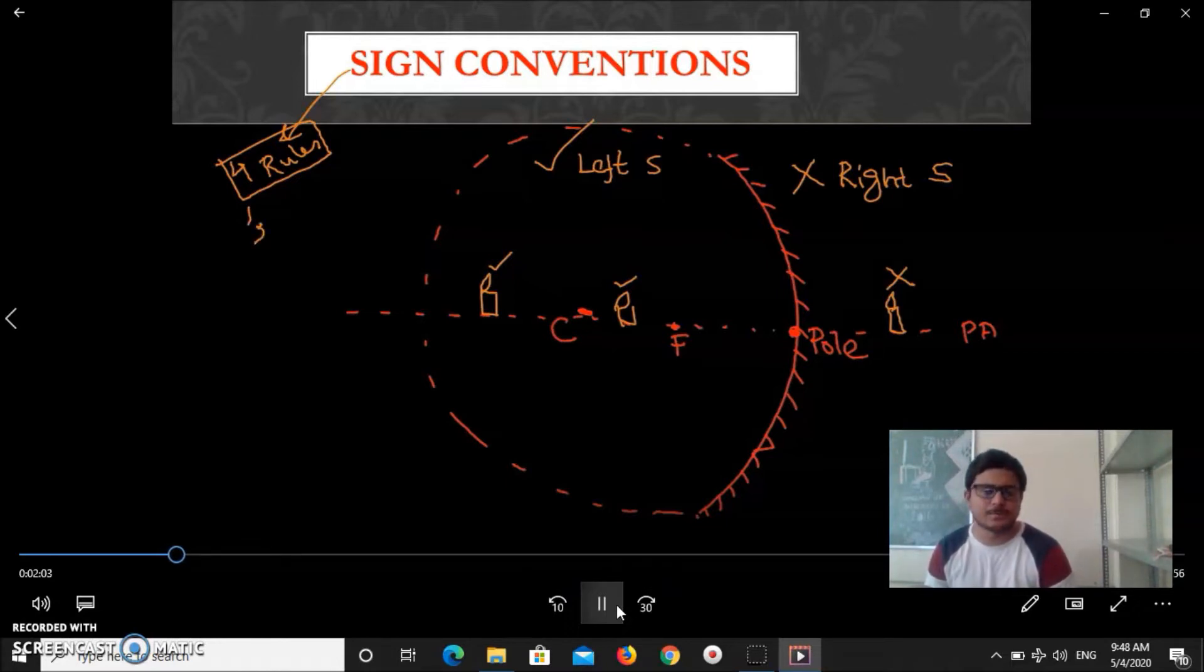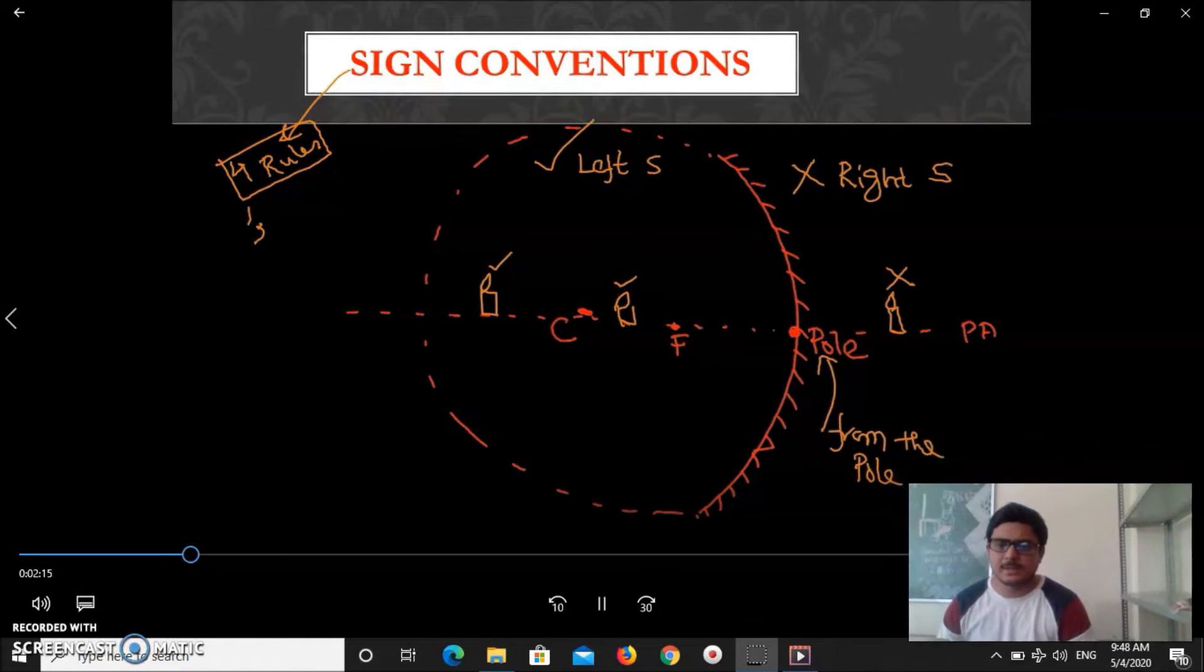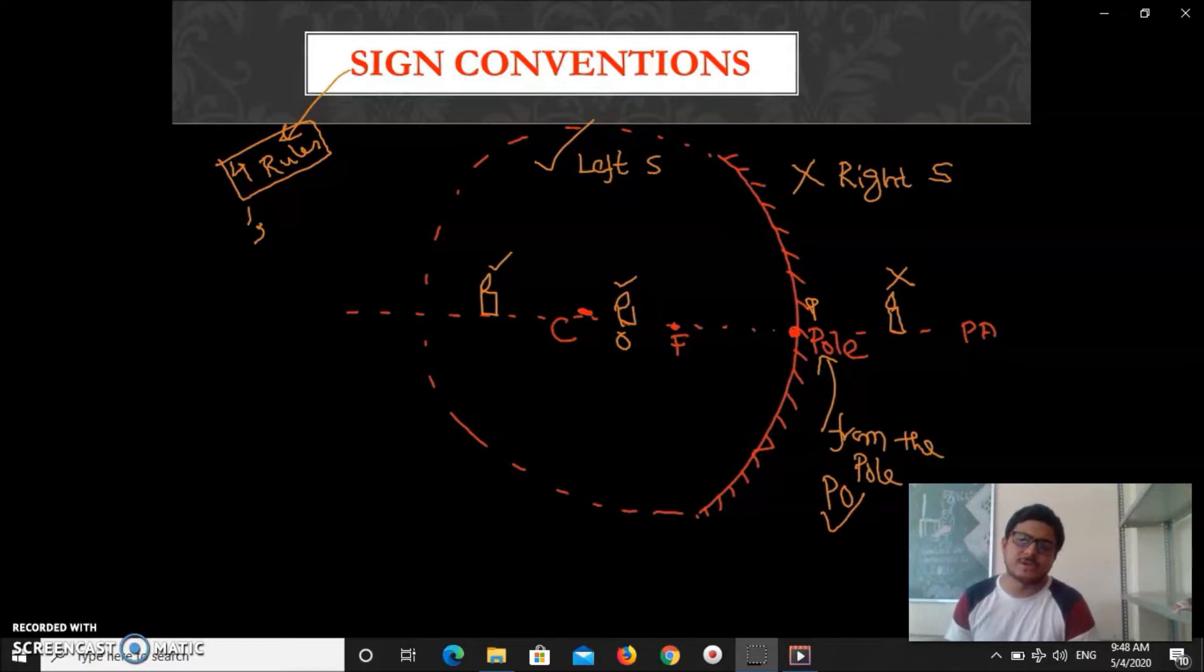Second rule told us, we know this is the pole, every measurement should be done from this pole. It means whatever you want to measure, maybe object distance you want to measure, so it should be done from the pole. From P you have to calculate object distance, so it will be P-O, not O-P. So this is the rule. We should do all the measurement from the pole.